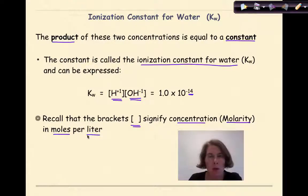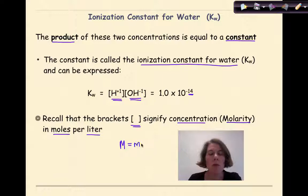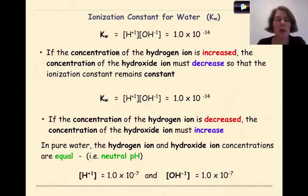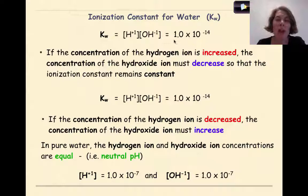One thing to remember: molarity, which is a capital M, is equal to moles over liters, which we'll refer back to in future videos. Now let's look at the relationship between the concentration of hydrogen and the concentration of hydroxide, remembering that they must always equal the constant of 1 times 10 to the negative 14.